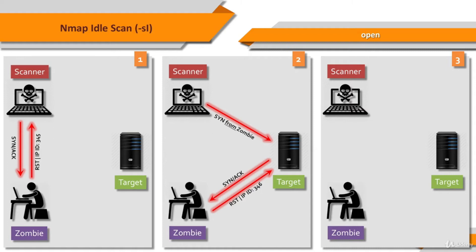The third step is to probe the zombie's IPID again. The attacker sends a SYN/ACK to the zombie again. The RST packet of the zombie has an IPID which is increased by two since the first step, so the port is open.